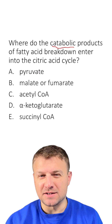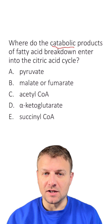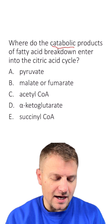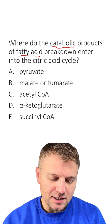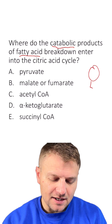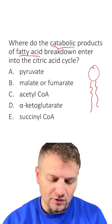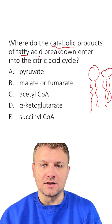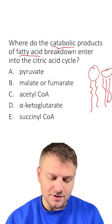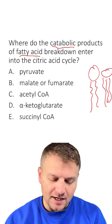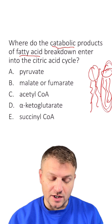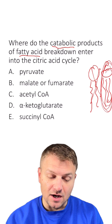Catabolic basically means that it's breaking larger things into smaller things. Fatty acids — we typically find fatty acids in triglycerides and phospholipids, where they have these long chains of hydrocarbons. In this case, we're not talking about phospholipids; we're talking about triglycerides themselves.